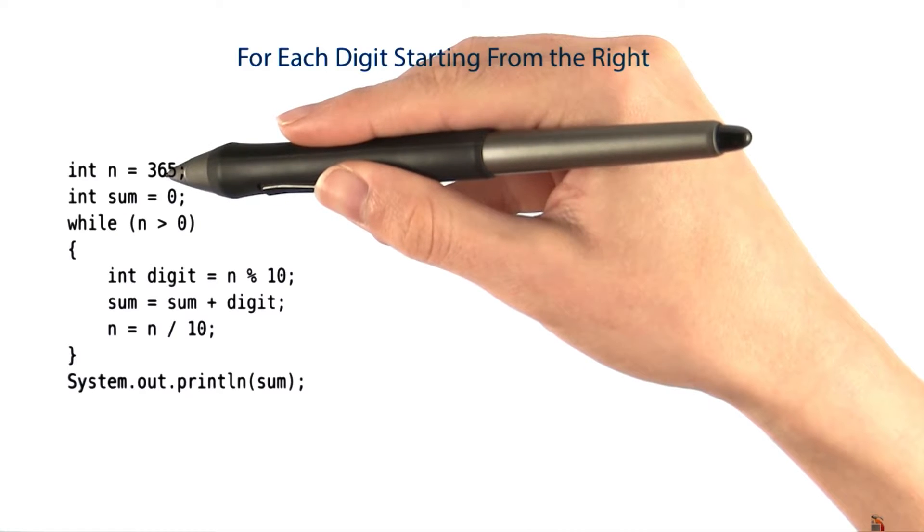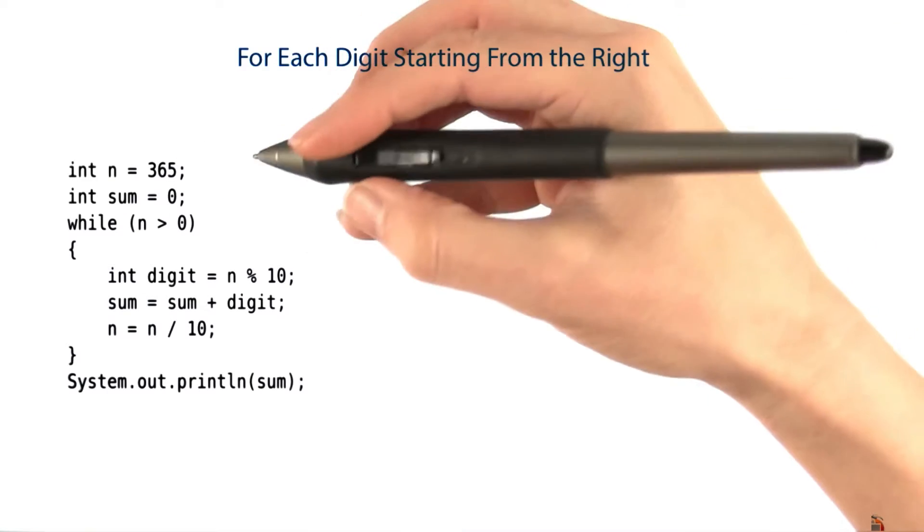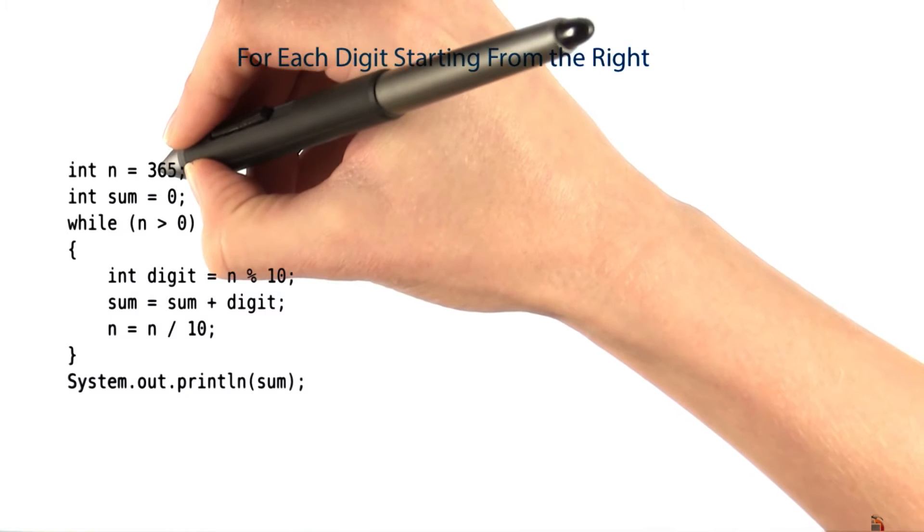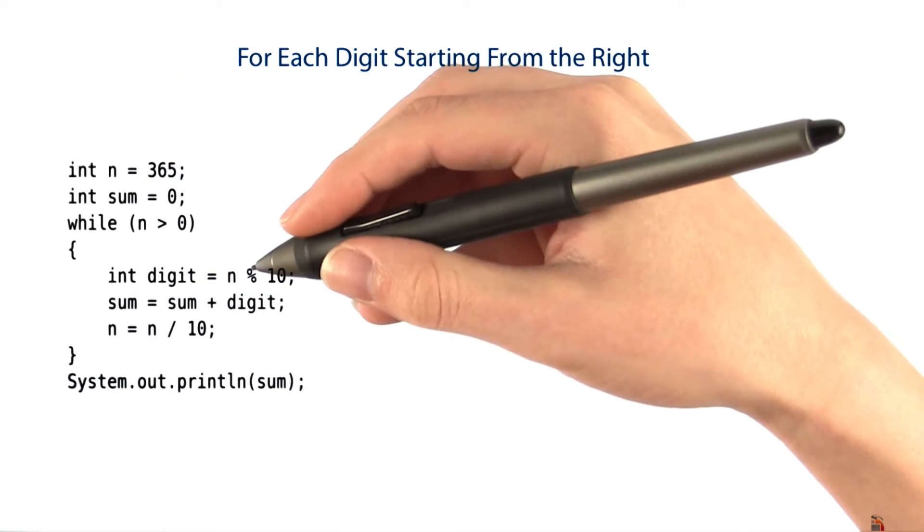Now you've seen this code that calculates the sum of the digits of a number. But we promised that this code for iterating over each digit in a number would be useful for validating credit card numbers.